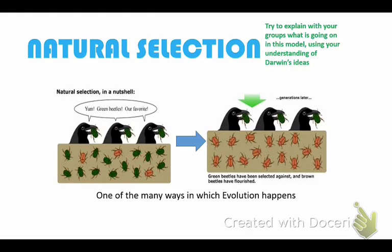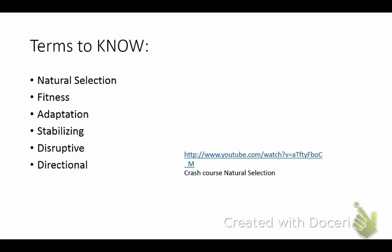You can see this bird ate all the green colored beetles. The orange ones are what's left. The birds preferred the green beetles, so they ate them all, and after a few generations there were no green beetles left. So all of a sudden, the whole population is made up of orange beetles and no more green beetles.